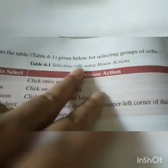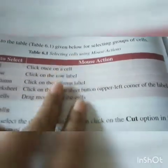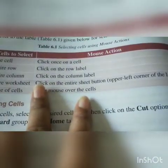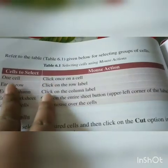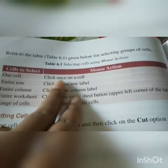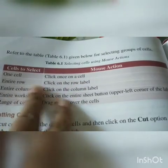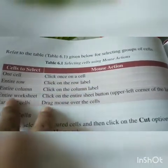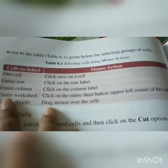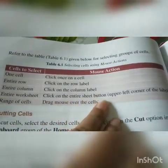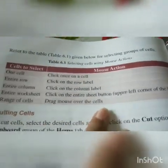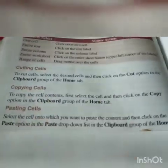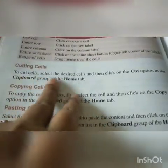Refer to the table below for selecting groups of cells. To select one cell: click once on a cell. To select an entire row: click on the row header. To select an entire column: click on the column header. To select the entire worksheet: click on the select all button. To select a range of cells: drag the mouse over the cells.